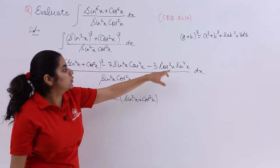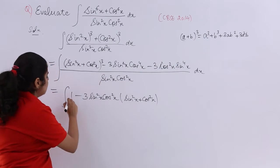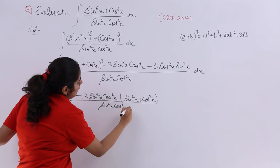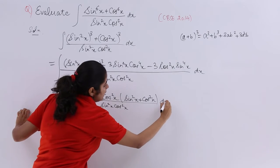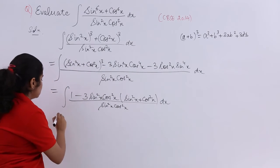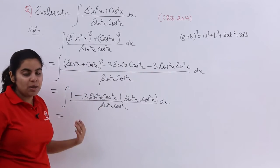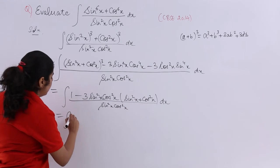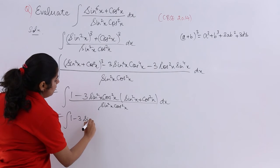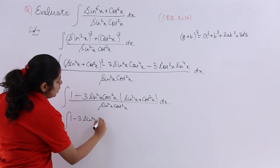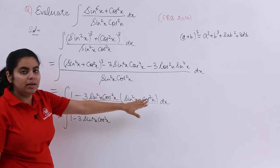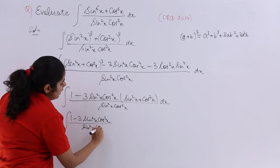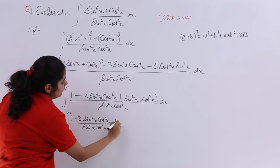Cos square x from here, sin square x from there, upon sin square x cos square x and dx does not change. Next you can always separate the things, but first let's see what this becomes. Again this becomes 1. So it is 1 minus 3 sin square x cos square x multiply by 1 divided by sin square x cos square x dx.